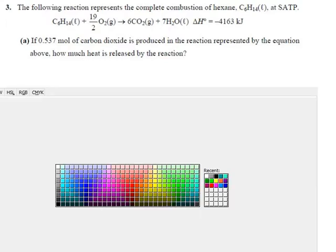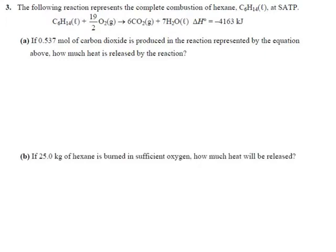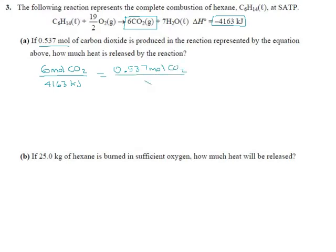I'll do it with cross multiplication first, and then with the formula. Taking these two numbers out of the reaction — the energy and the carbon dioxide — you can say: if six moles of carbon dioxide goes with 4163 kilojoules, then 0.537 moles of carbon dioxide goes with what? These two numbers are out of the reaction. Make sure your CO2s are lined up and your kilojoules are lined up — you don't want a crisscross.